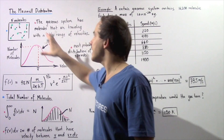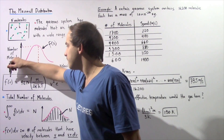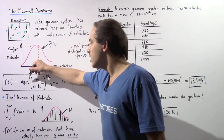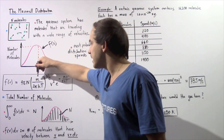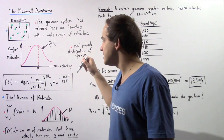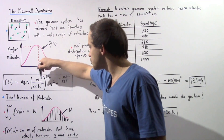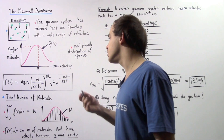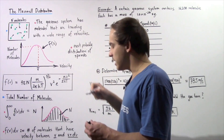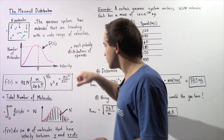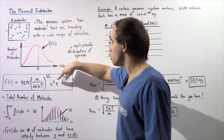This curve is known as the Maxwell distribution of speeds, given by the equation: f(v) = 4π n · (m / 2πkT)^(3/2) · v² · e^(−mv² / 2kT), where n is the number of gas molecules, m is the mass of a gas molecule, π is a constant, k is the Boltzmann constant, and T is the temperature in Kelvins.